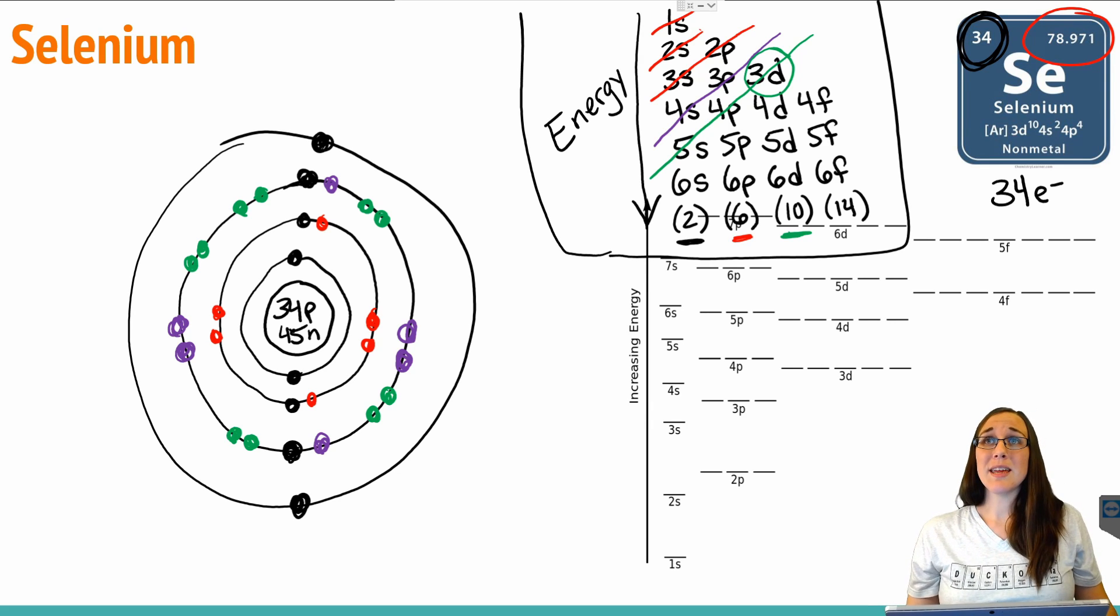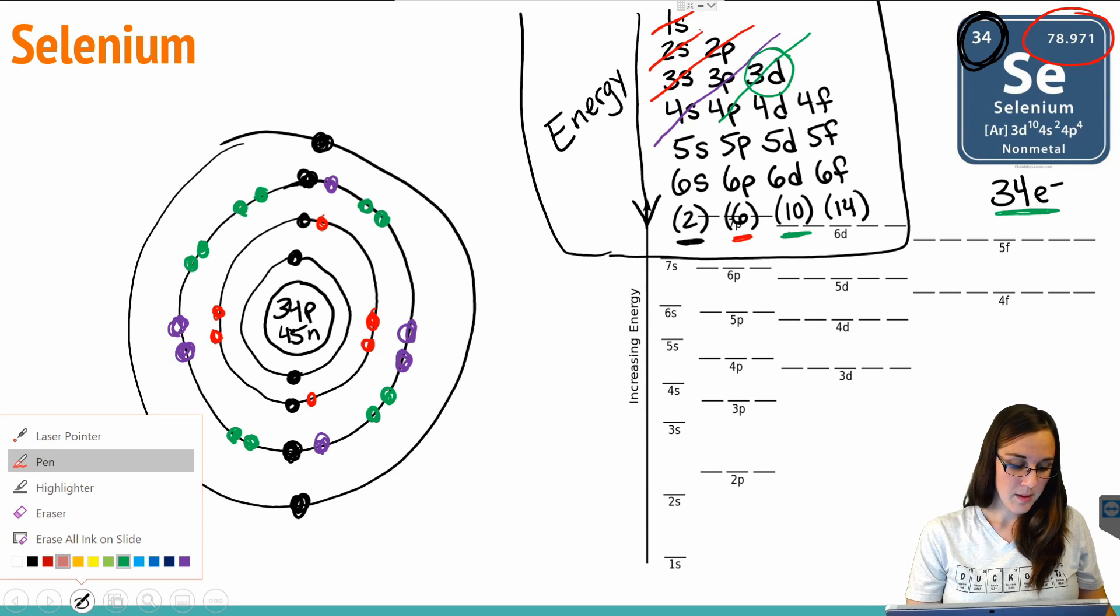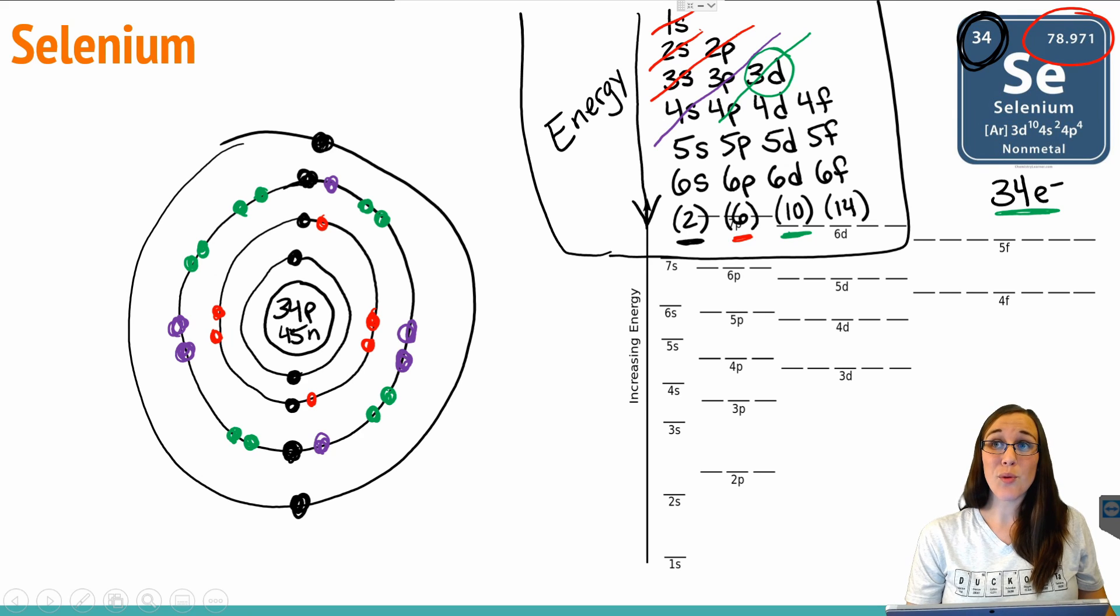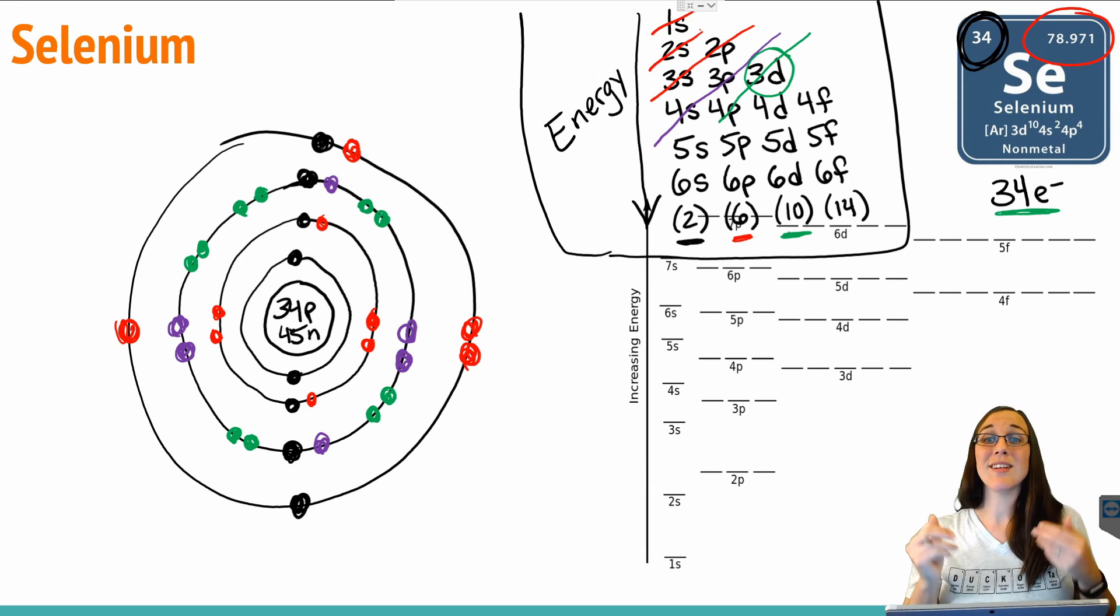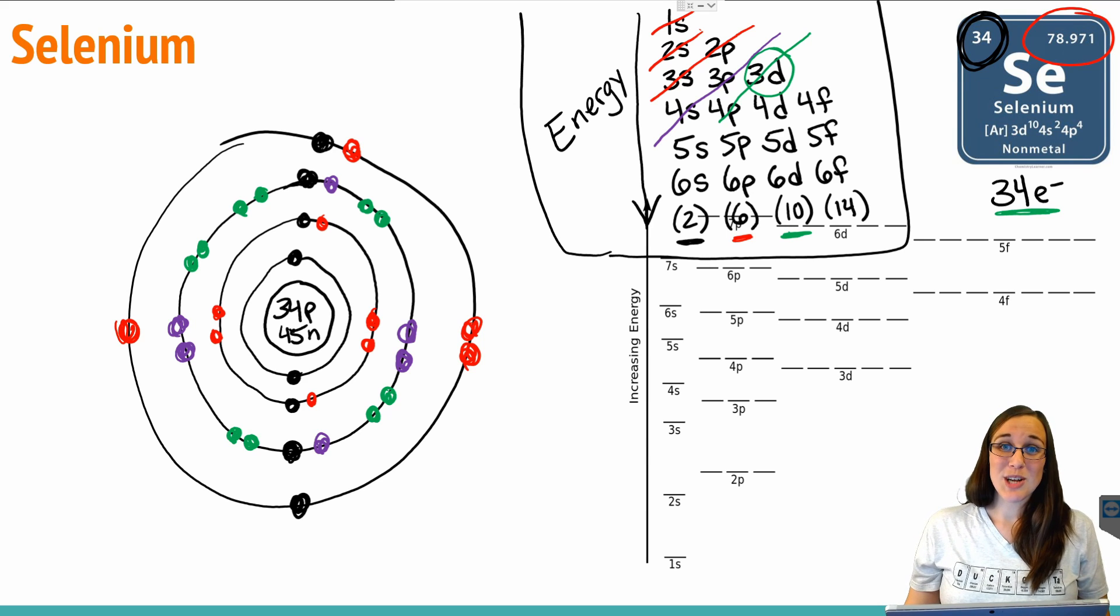Thus far we have exactly 30 electrons, so we need to add another 4 to get to 34 electrons. That means we actually don't even need 5s in this case. We just need to go through 4p. In 4p we can fit a max of 6 electrons, but we only need to put 4. You can see how that would yield the same exact Bohr model that we did by using the orbital filling diagram, just by thinking about it a little bit differently, filling from the top down instead of the bottom up.